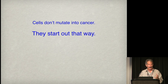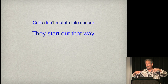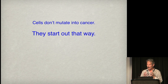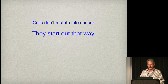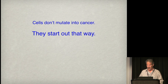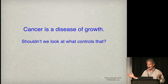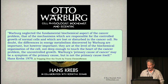Cells don't mutate into cancer — they start out that way. We come from an ancestral history of unicellular organisms whose main directive was to out-replicate their neighbors. All of that predilection is in all of our cells and has to be constantly suppressed. You don't have to mutate cells into cancer — all you have to do is prevent them from not being cancer. Cancer is obviously a disease of growth, so it makes sense to look at what controls growth.